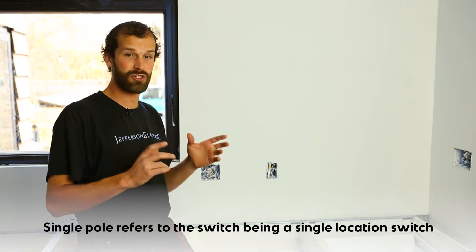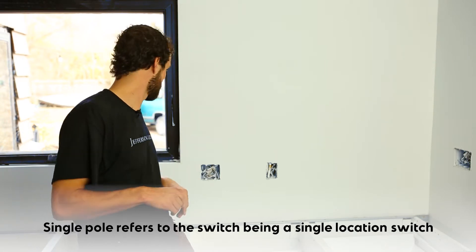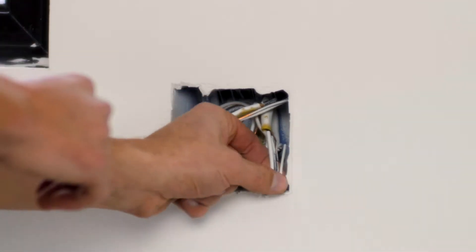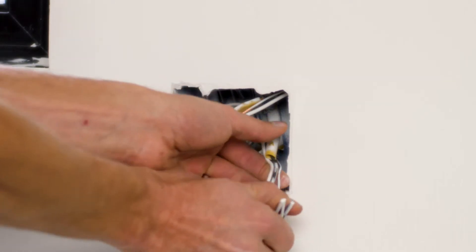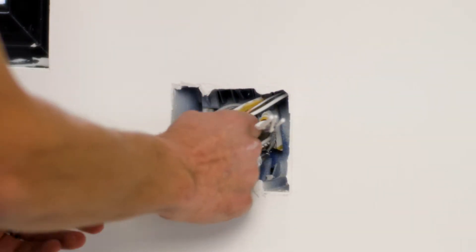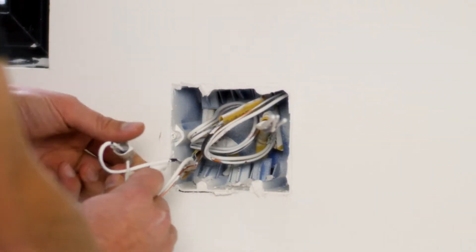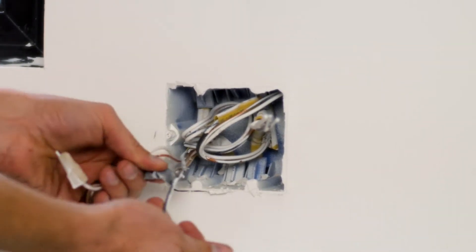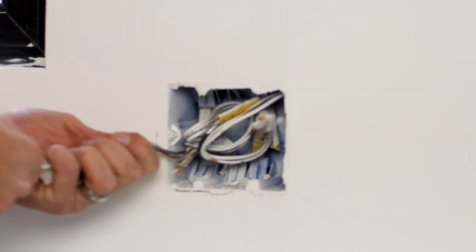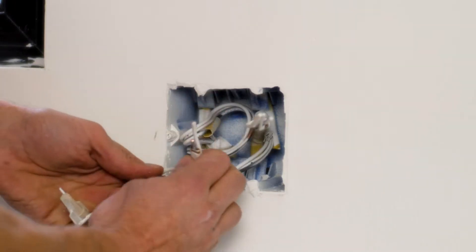Single-pole refers to the internal mechanism of the switch and the fact that it's a single location switch. I'm gonna pull my wires out of the wall and identify their purpose. This is my hot feed into the box. You can see it's marked with a flag and it's capped with wire nuts in case that breaker should be turned on.